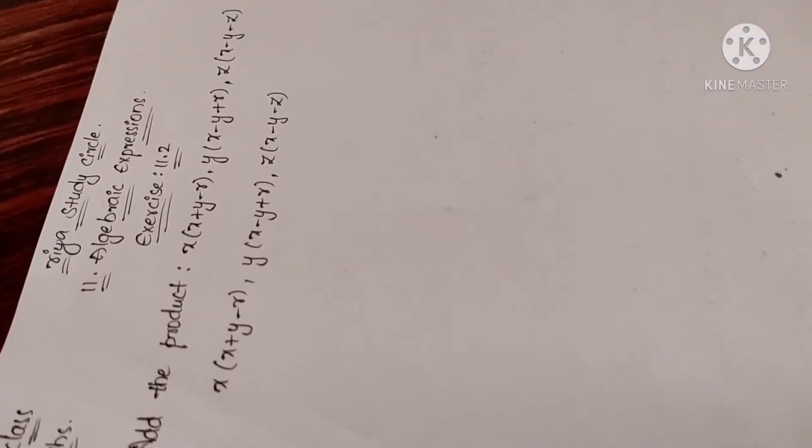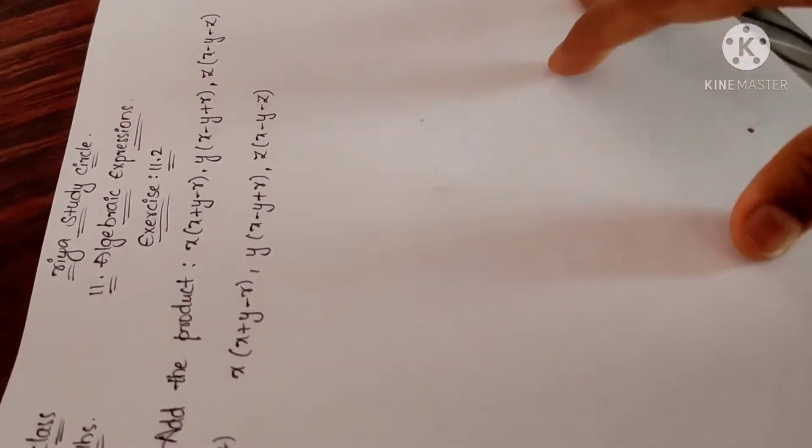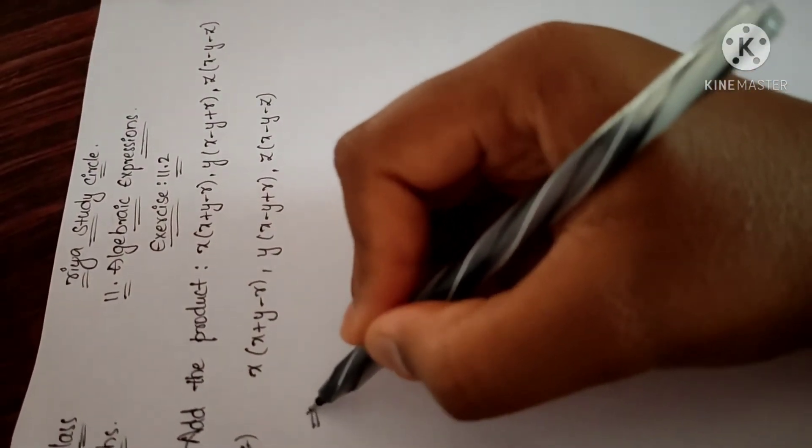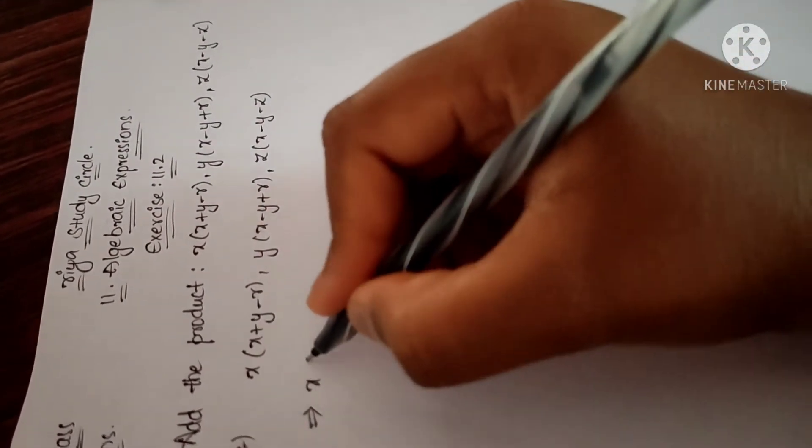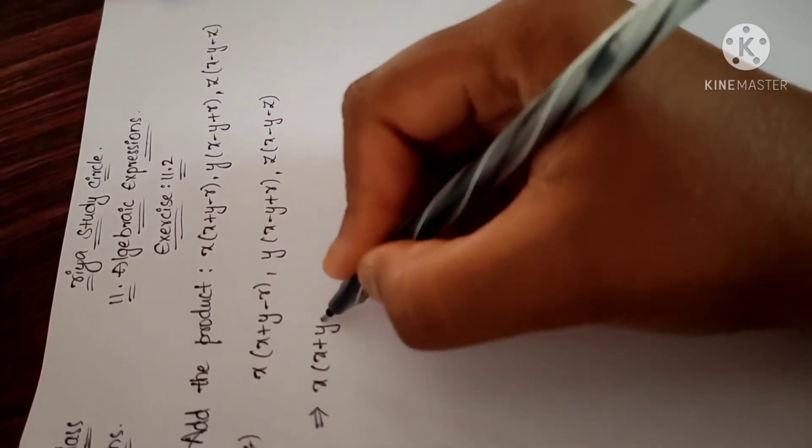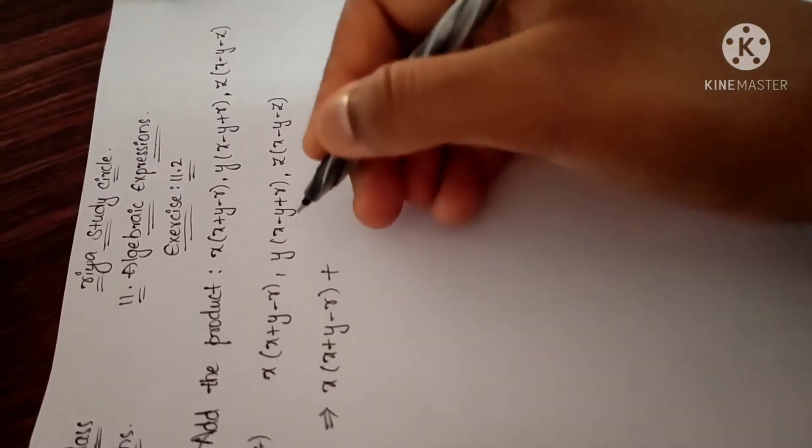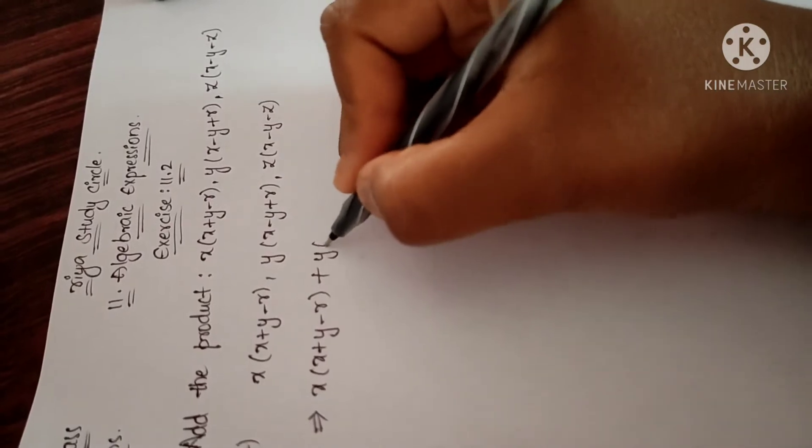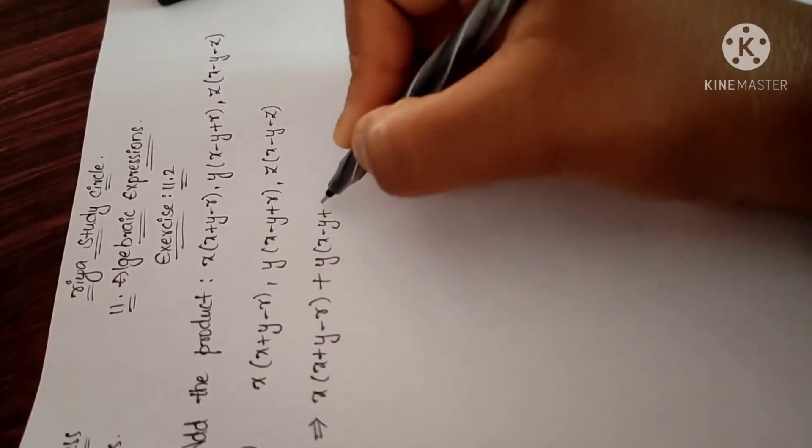First, x into x plus y minus r, plus second one is y into x minus y plus r, plus z into x minus y minus z.